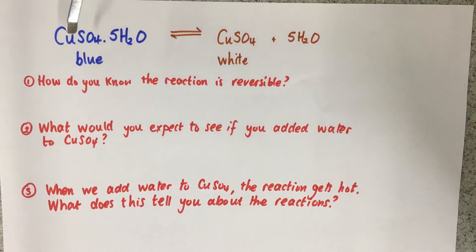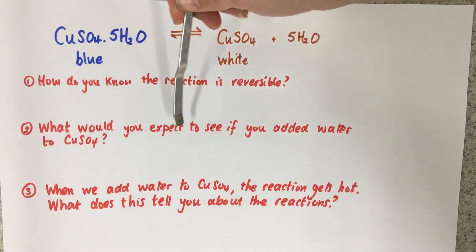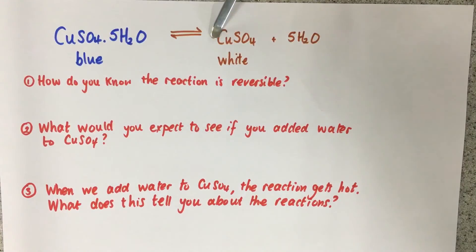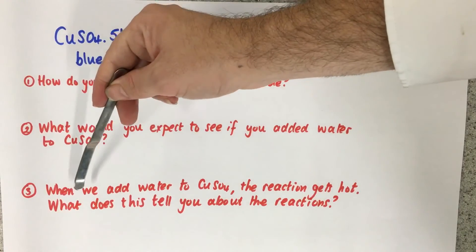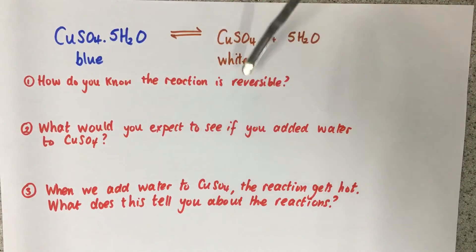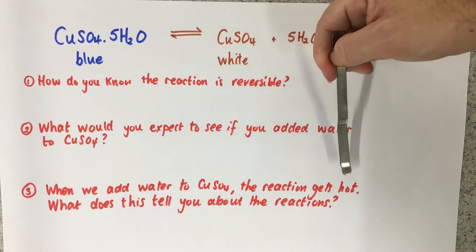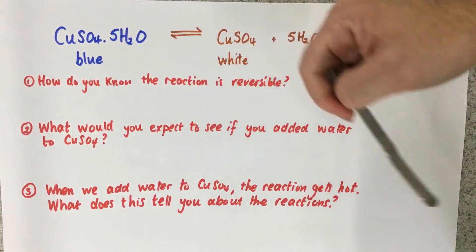So in this reaction, we have CuSO4·5H2O, which is blue, goes to CuSO4, anhydrous copper sulfate, which is white, and 5 water. And there are three questions. The questions are: how do you know the reaction is reversible? What would you expect to see if you added water to anhydrous white CuSO4? And when we add water to CuSO4, the reaction gets hot. What does this tell you about the reactions?